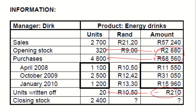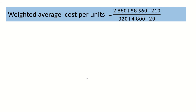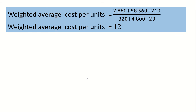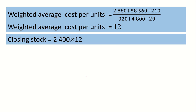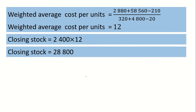In the denominator, you will have the opening number of units, which is 320. The corresponding number of units for the purchases of $58,560 will be 4,800. For your returns, the number of units will also be 4,800. You will add those and then minus the returns. The value you get will be the cost price of your closing stock, which is $12,000. You will then multiply that $12,000 by the number of units remaining at the end of the year, giving you a closing stock value of $28,800.